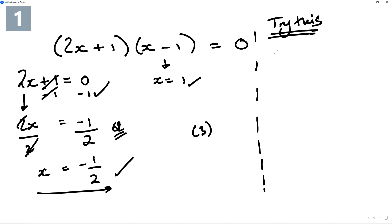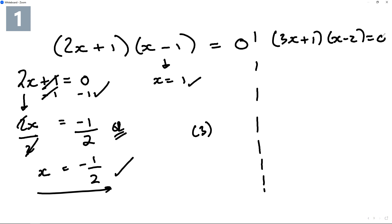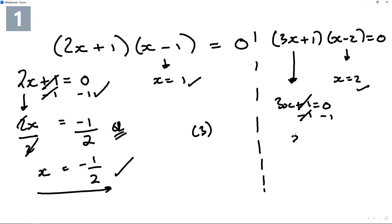Check this out: (3x + 1) and (x - 2) equals zero. For x minus 2: x equals 2 straight away. For 3x + 1: write it equal to zero, subtract 1 on both sides, giving 3x equals minus 1, then divide both sides by 3 to get x equals negative one over three.